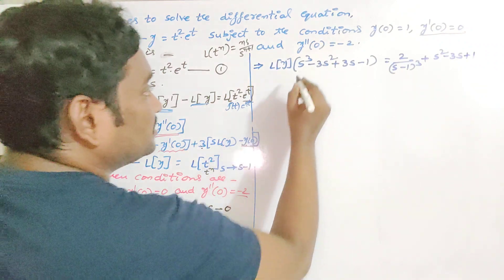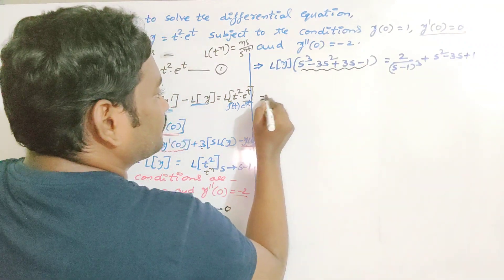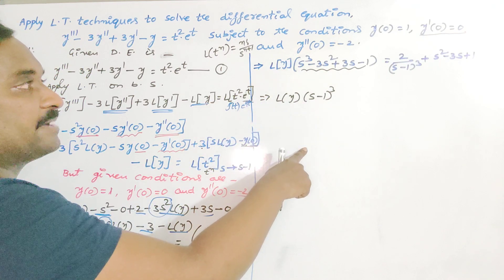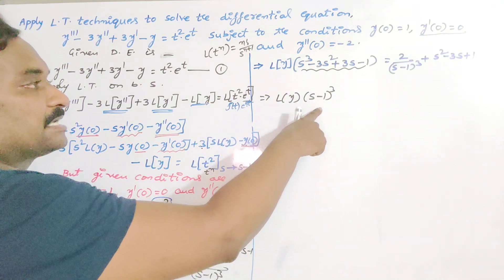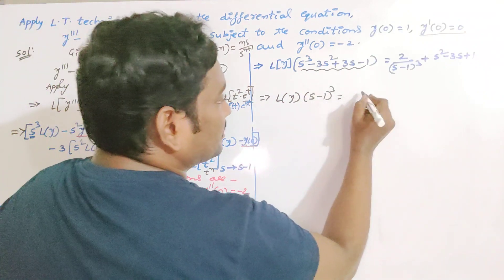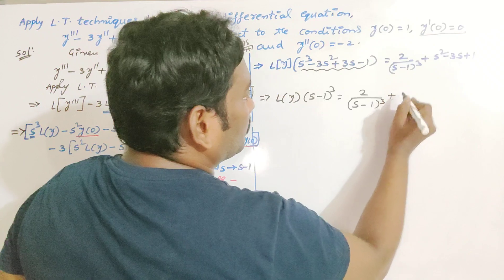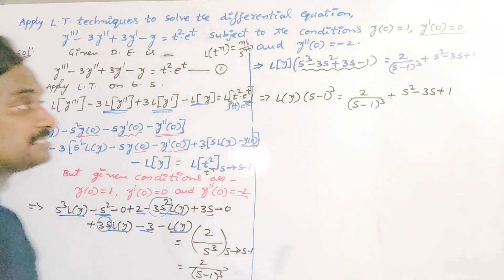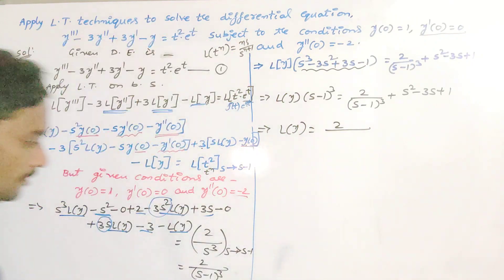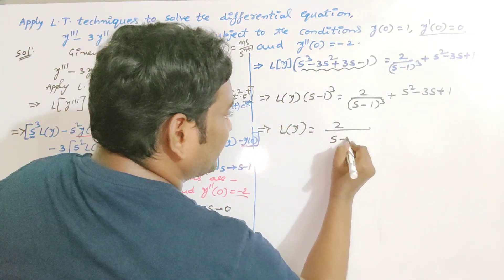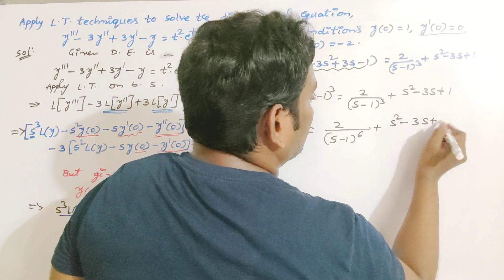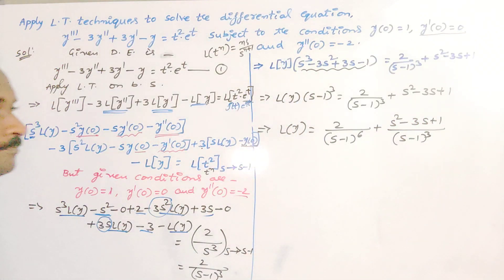We observe that the left side is in the form of (S minus 1)³, which matches the formula A³ minus 3A²B + 3AB² minus B³ = (A minus B)³. Therefore, (S minus 1)³ × L{y} = 2/(S minus 1)³ + S² minus 3S + 1, so L{y} = 2/(S minus 1)⁶ + (S² minus 3S + 1)/(S minus 1)³.